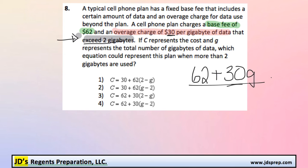So to try to figure out which one of these equations is true, we can tell right away that number 1 and 2 are wrong because it's not 62 over here, it's 30.